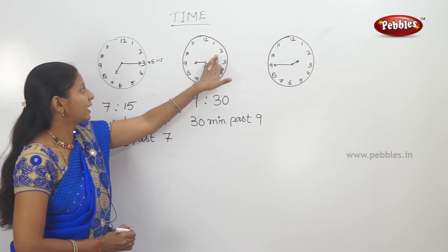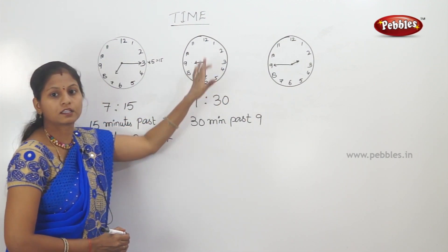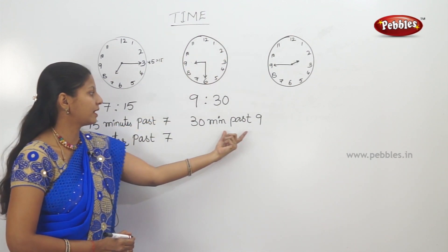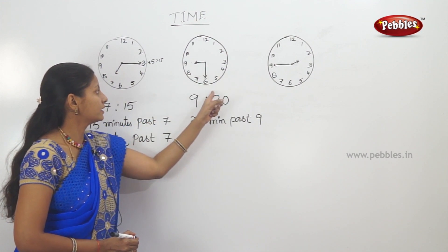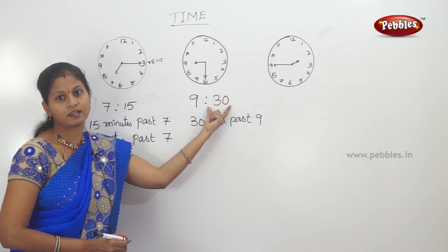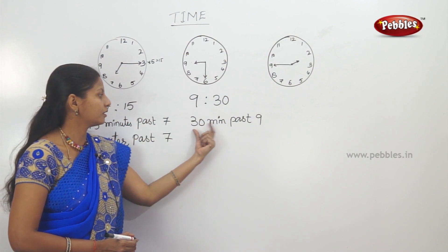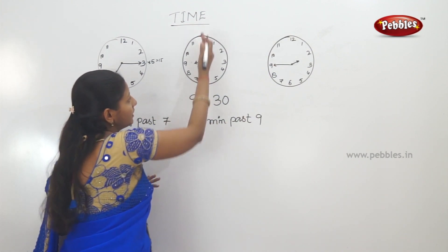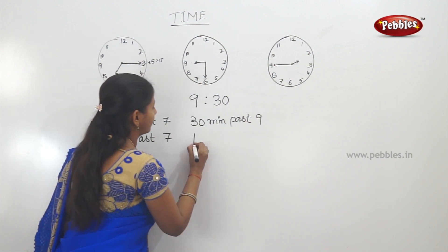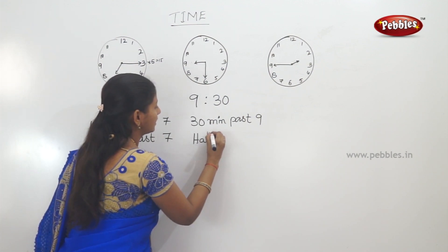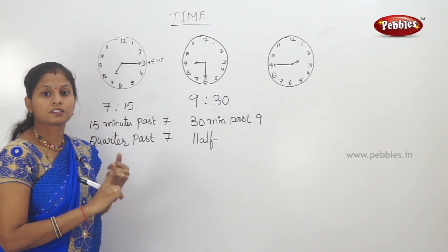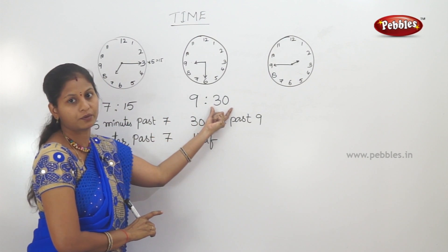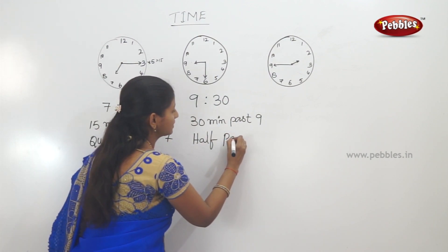So when you count 12, 30 minutes will complete. 30 minutes past 9 — after 9, 30 minutes will complete. If you look at the middle part, 6 is half. Half past. If you look at 60 divisions — 60 minutes — 30 is half. So, half past 9.